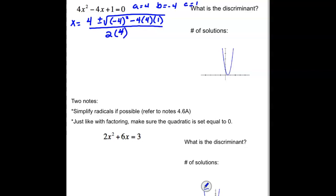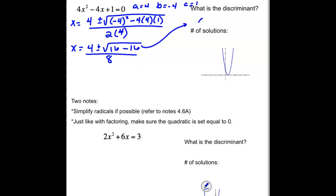Looking at our discriminant: negative 4 squared would be 16. We're subtracting 4 times 4 times 1, so we're subtracting 16, and dividing the whole thing by 8. 16 minus 16 is 0. So our discriminant is 0, and when we square root 0, we get 0. Adding and subtracting 0 to 4 isn't going to do anything, so we really just end up with 4 divided by 8. We should reduce this to 1 half.